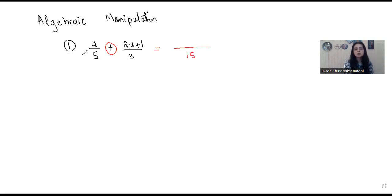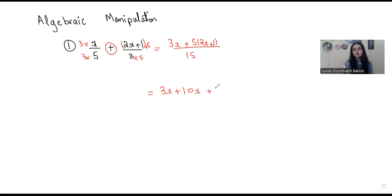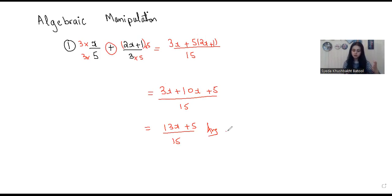I will be multiplying x by 3, and this expression will also be multiplied by 5. So I can write down the numerators now — it would be 3x plus 5 into (2x plus 1). Simplifying, it would become 3x plus 10x plus 5 divided by 15, which gives me 13x plus 5 divided by 15. In the beginning we had two fractions being added, and finally we have one fraction.